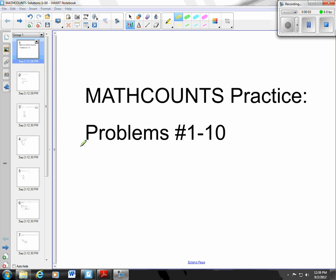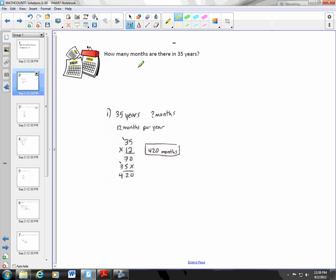These are the solutions to the first 10 problems in the Math Counts Practice Packet. So how many months are there in 35 years? First you need to know that there's 12 months per year, so you just do 35 times 12. That gives you 420.